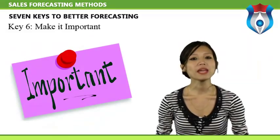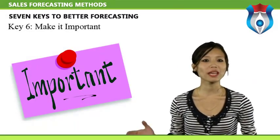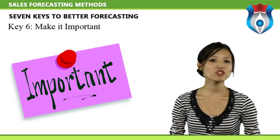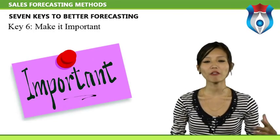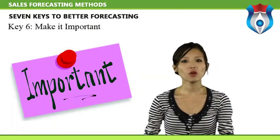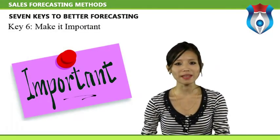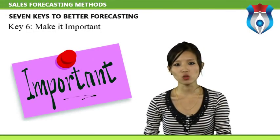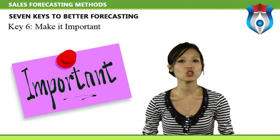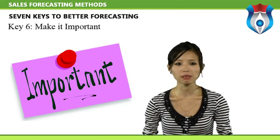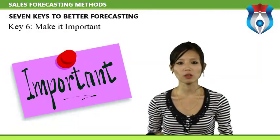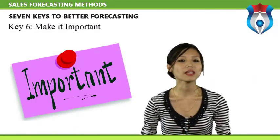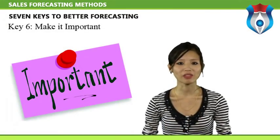Key 6: Make It Important. 'What gets measured gets rewarded, and what gets rewarded gets done.' This management truism is the driver behind our final two keys. Sales forecasting is often described by senior management as an important function, but although this assessment may be shared by individuals throughout the firm, few organizations institute policies and practices reinforcing the notion that forecasting is important for business success. There is often a gap between management words and their actions.